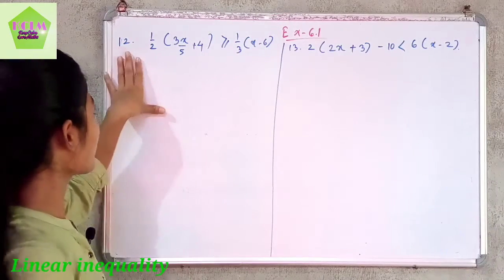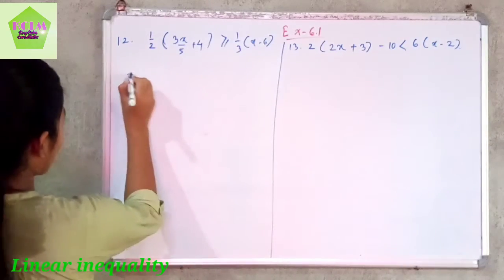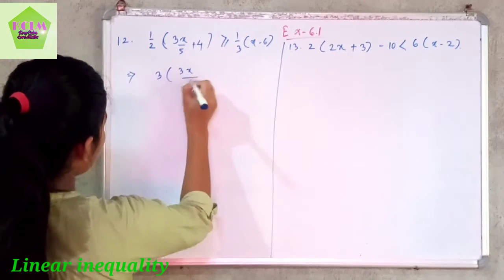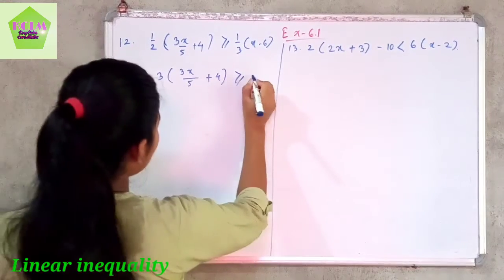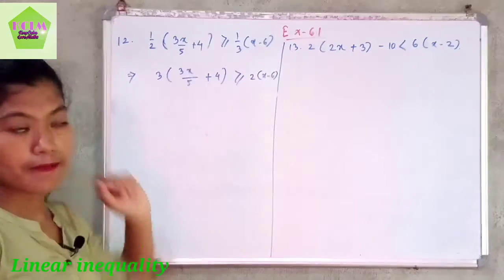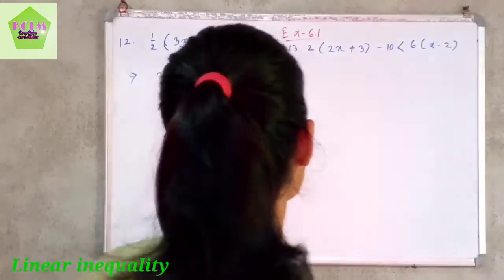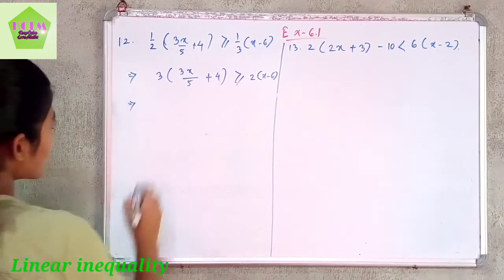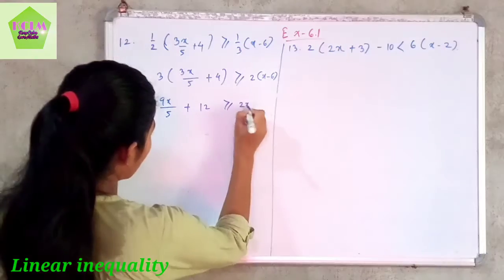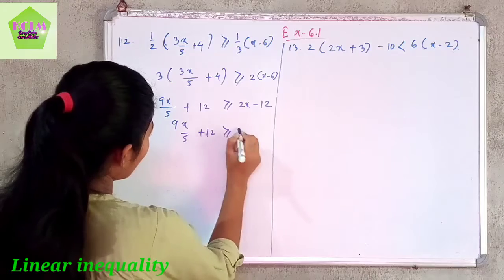Question number 12: solve one half times (3x divided by 5 plus 4) greater than or equal to one third times (x minus 6). Cross multiplying gives 3 times (3x divided by 5 plus 4) greater than or equal to 2 times (x minus 6). Multiplying through: 9x by 5 plus 12 greater than or equal to 2x minus 12.